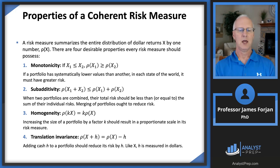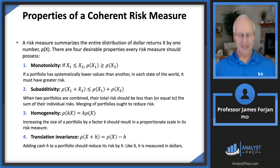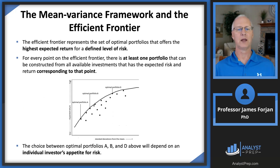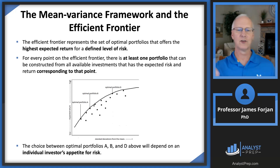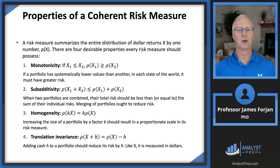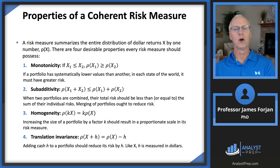Translation invariance has everything to do with adding cash to the portfolio. Remember, if you put a risk-free asset on the vertical axis — like the return on a Treasury bill — it turns the relationship linear. What this means is that if we add cash to the portfolio, we are going to be able to reduce the risk by the amount of cash we invest in that portfolio.